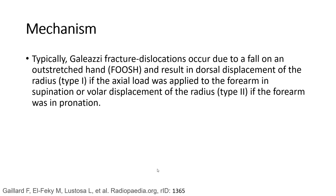A typical Galeazzi fracture dislocation occurs due to a fall on an outstretched hand, and results in dorsal displacement of the radius — Type 1 — if the axial load was applied to the forearm in supination, or volar displacement of the radius — Type 2 — if the forearm was in pronation.